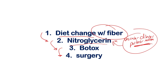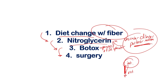If nitroglycerin doesn't work, then you go to Botox — botulinum toxin — which paralyzes the muscles in that area. Remember, the internal sphincter was causing problems because the longitudinal tear exposed it to the outside environment, causing it to contract and pull the fissure wider, making healing harder. Botox paralyzes the internal and external sphincters, allowing healing to occur.